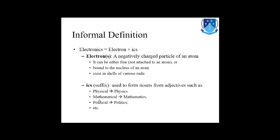Introduction to Electronics: electronics can be defined in two different ways. The informal definition is that electronics is made of 'electron' plus 'ics.' An electron is a negatively charged particle of an atom that can either be free — not attached to any atom — or bounded to the nucleus of an atom.